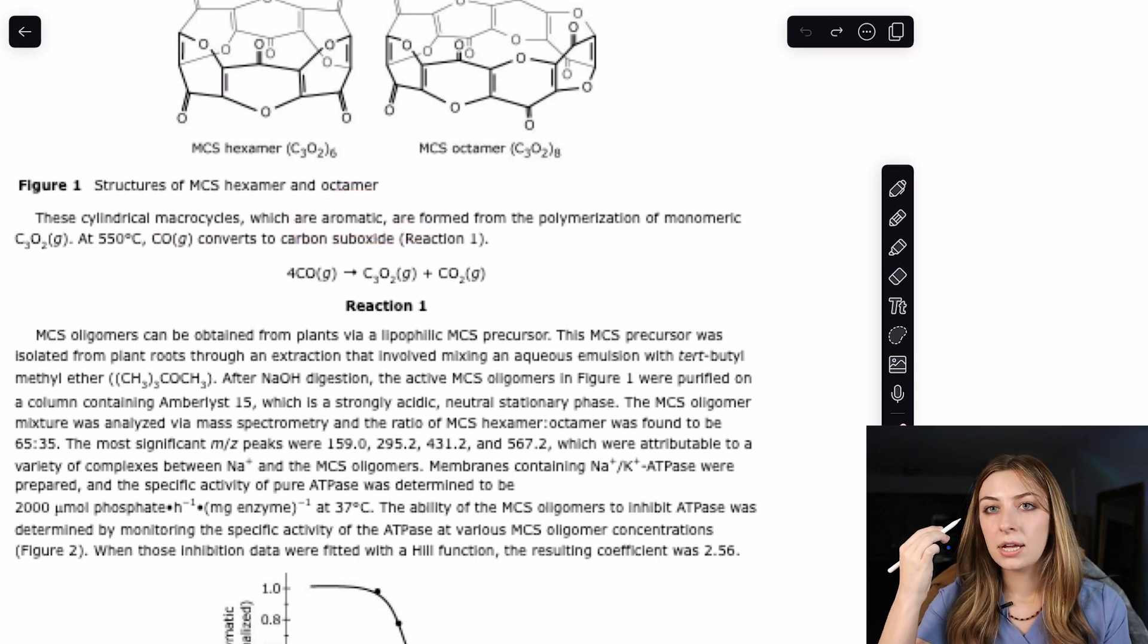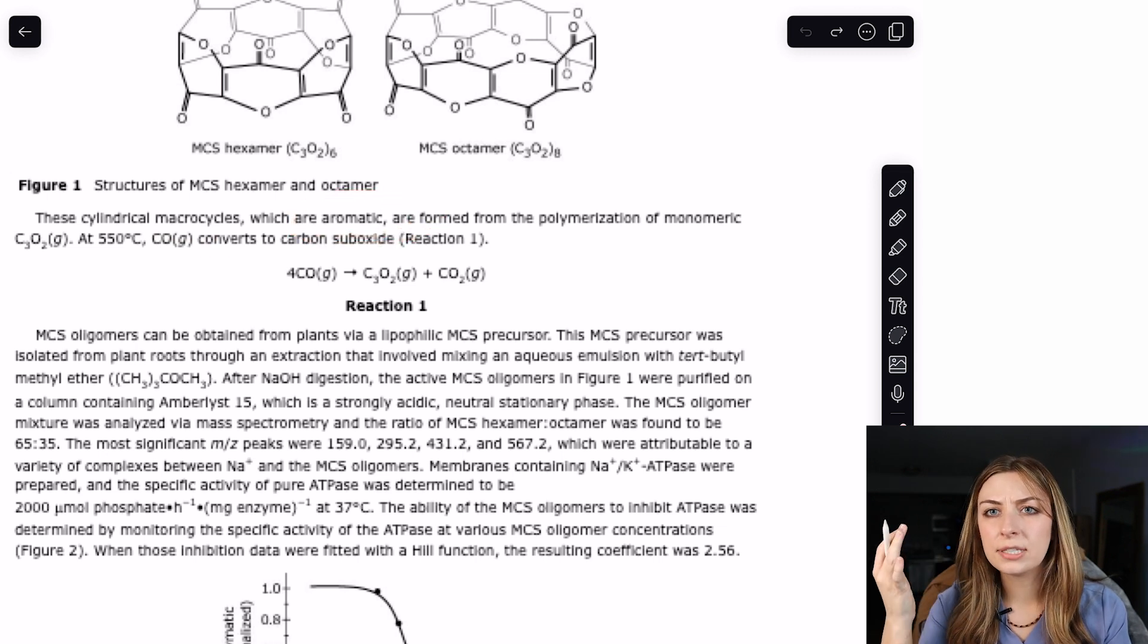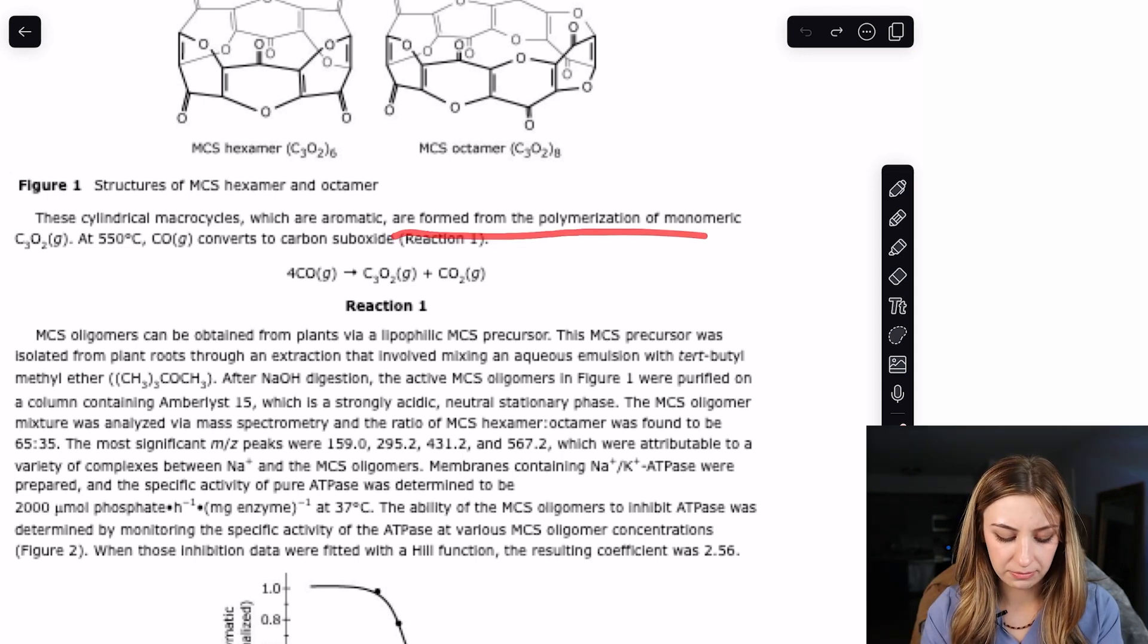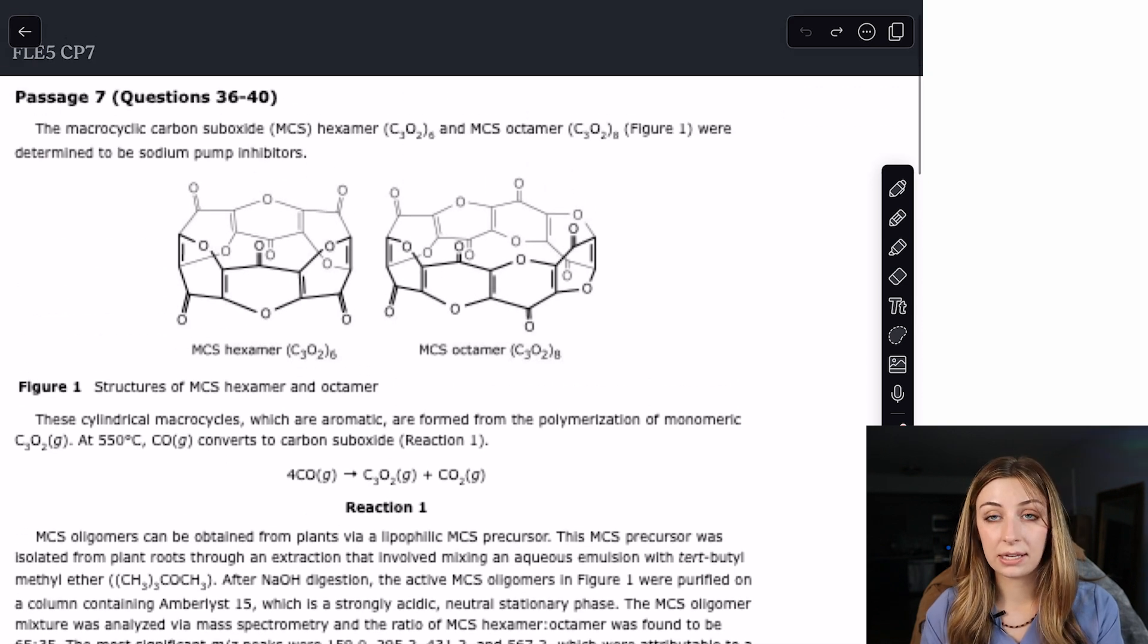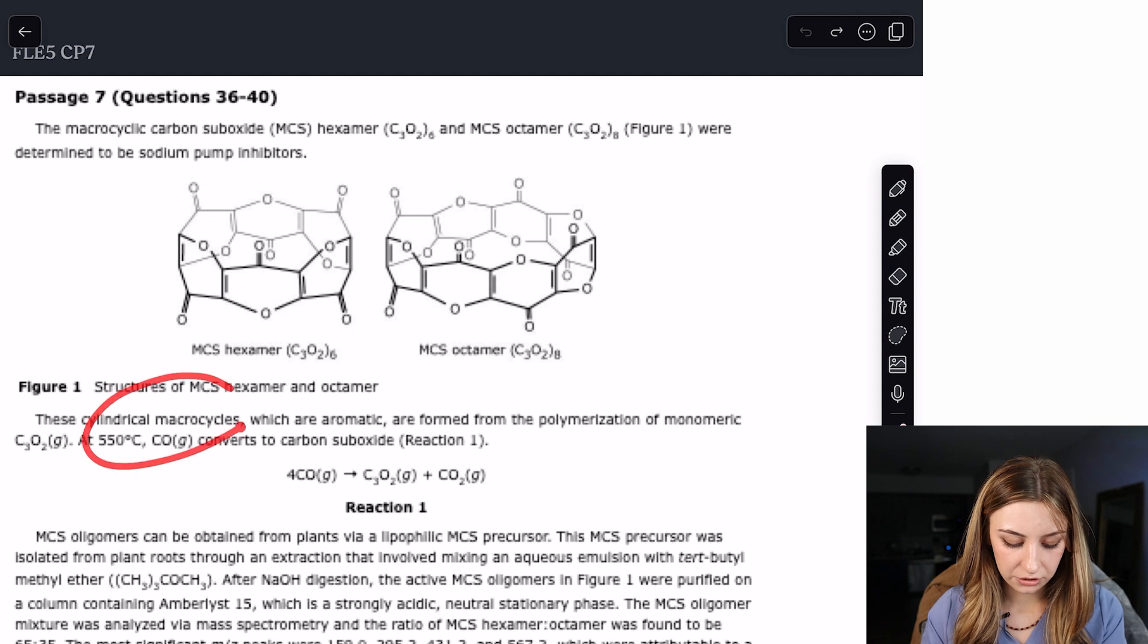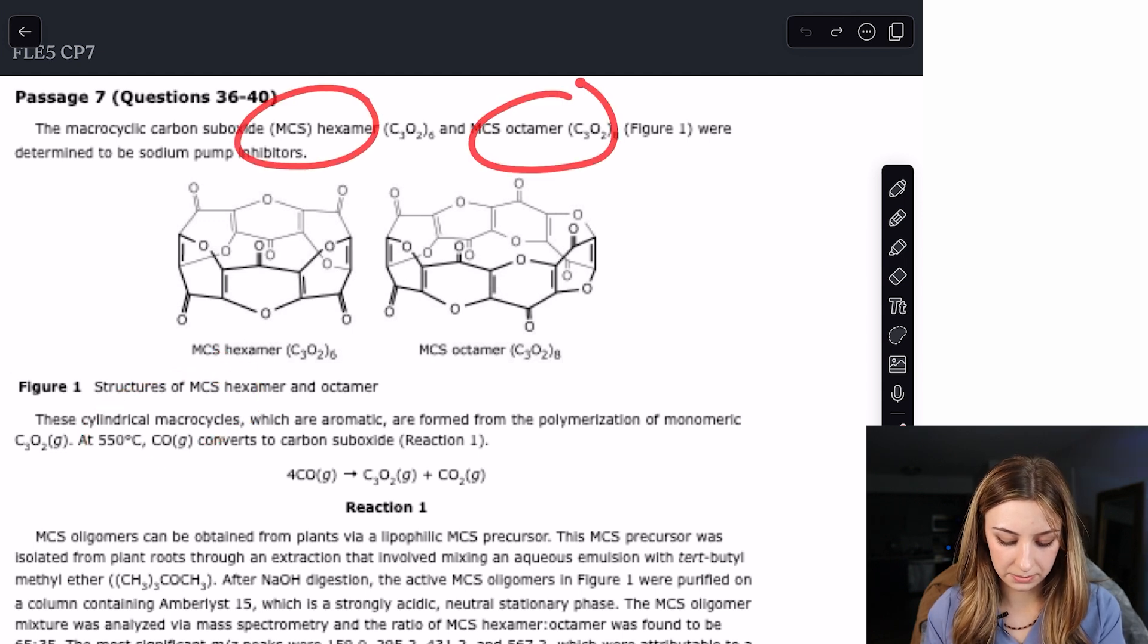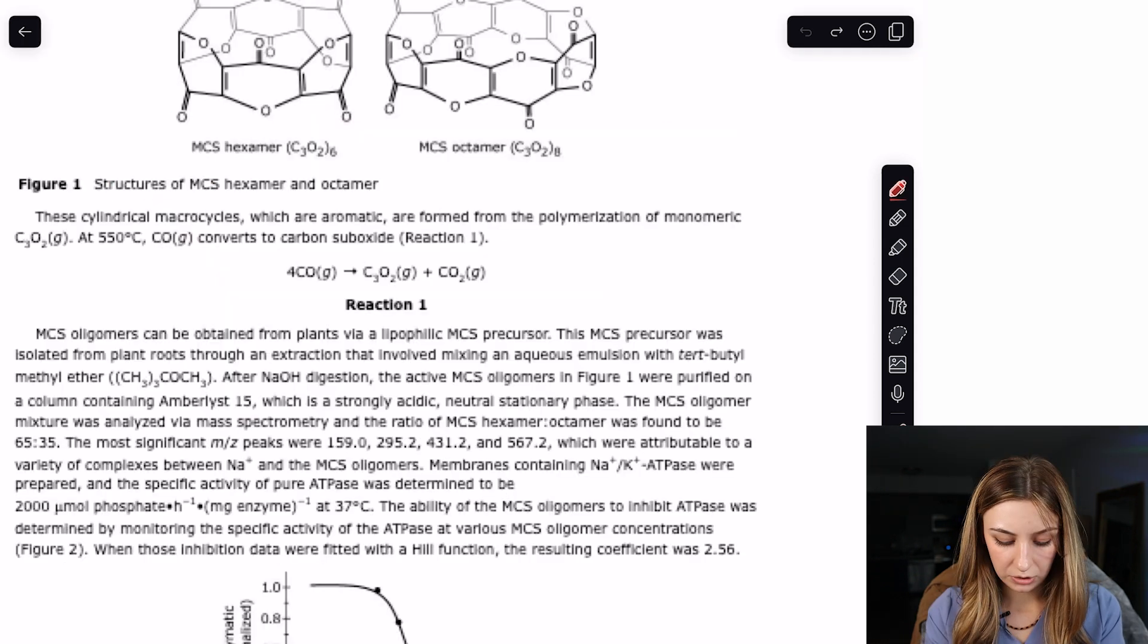It says these cylindrical macrocycles, which are aromatic. I'm starting to think of conjugation, UV spec, resonance, all that kind of stuff. They are formed from the polymerization of monomeric carbon suboxide at 550 Celsius. Carbon monoxide converts to carbon suboxide in reaction one. They give us a reaction also sus, so they might ask us about this reaction.